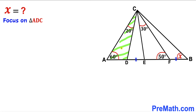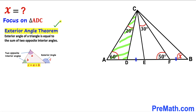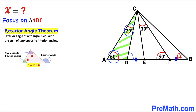Step 1: Let's focus on triangle ADC and apply the exterior angle theorem. The exterior angle equals the sum of the two opposite interior angles: 60 degrees plus 20 degrees gives us 80 degrees.